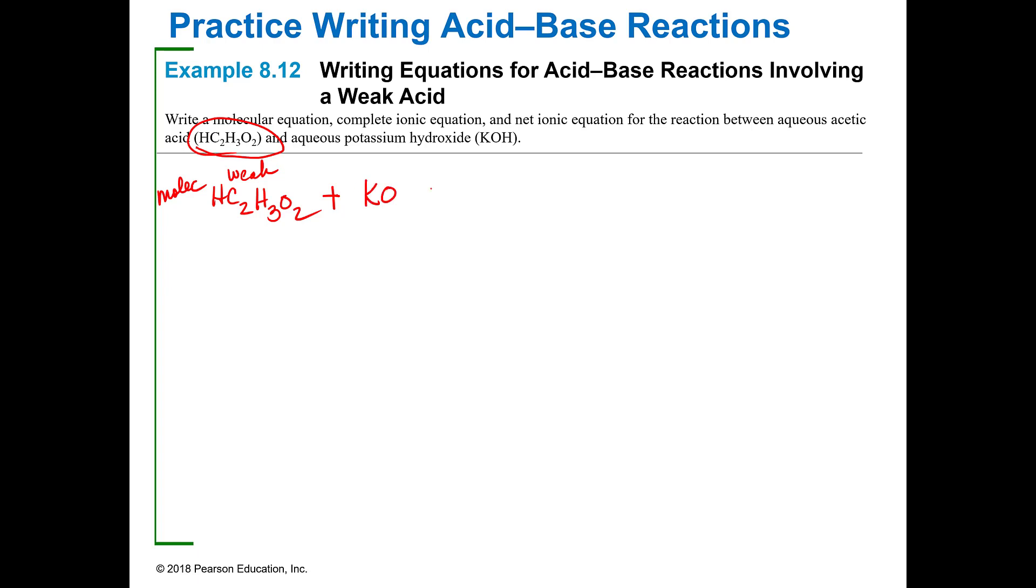So when I write the molecular for this, I'm going to write the HC2H3O2 which is acetic acid which is a weak acid plus KOH which is strong and they're still aqueous. And they're going to form, remember that this is a weak acid so it's not going to go completely to the right so it's going to have the double arrows, it's going to produce KC2H3O2 plus H2O.